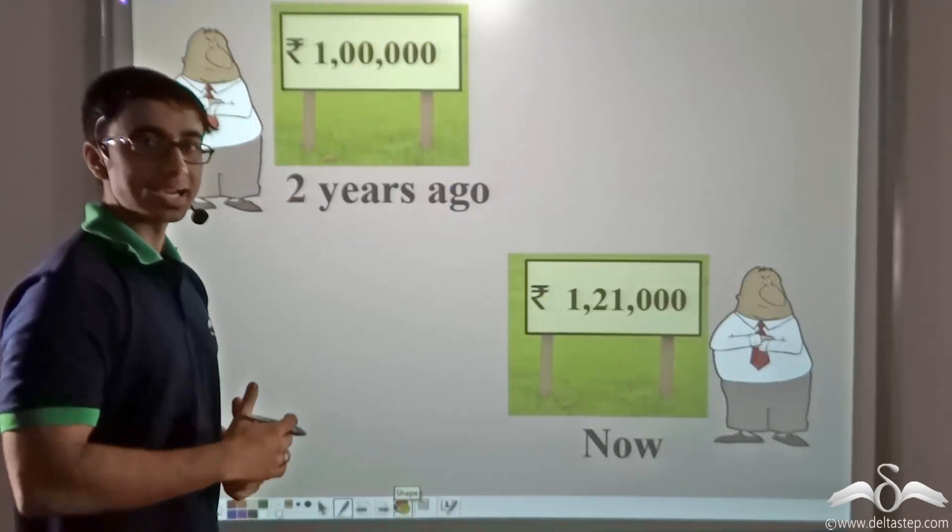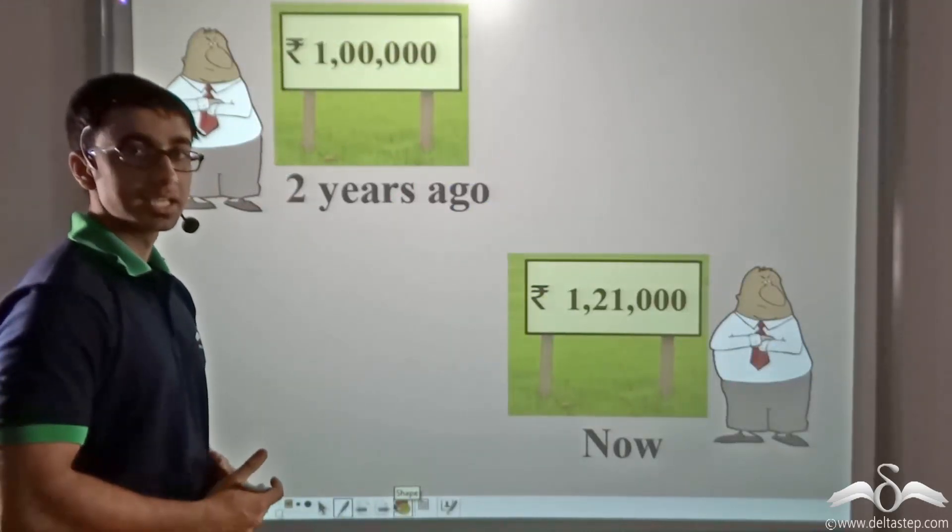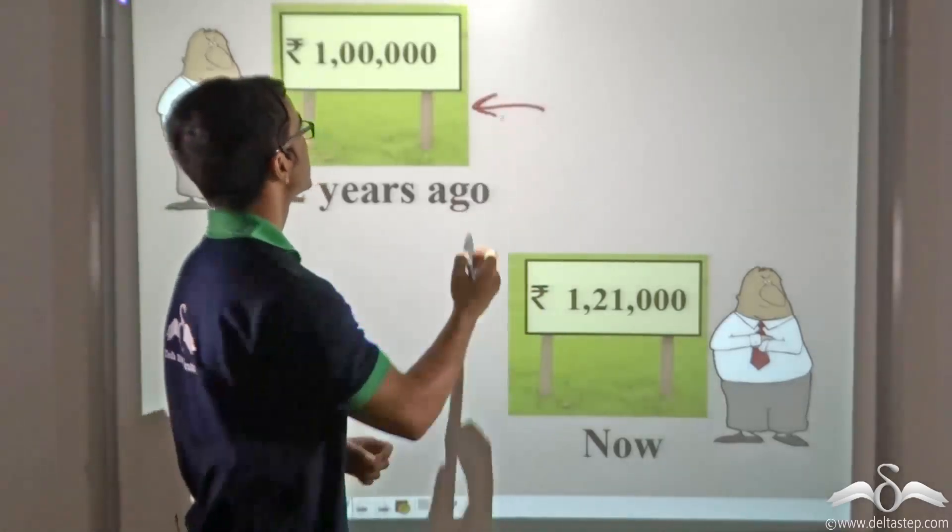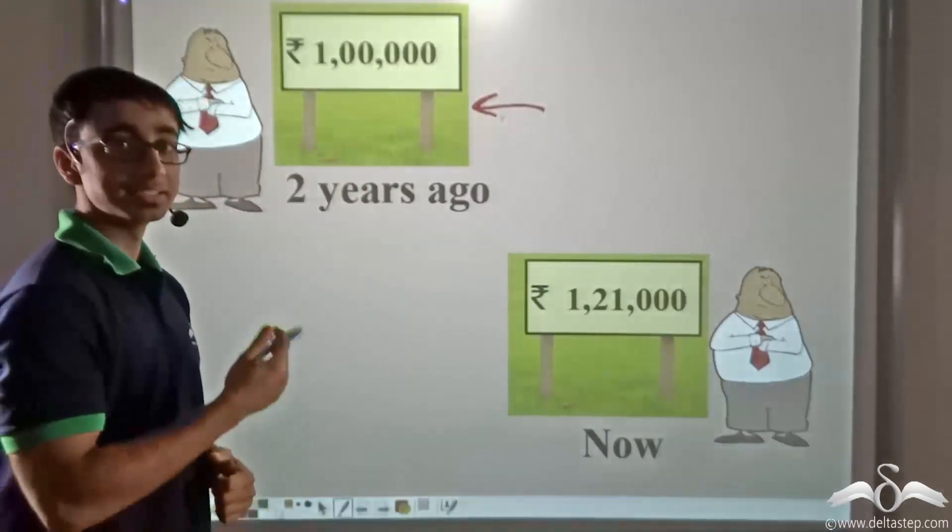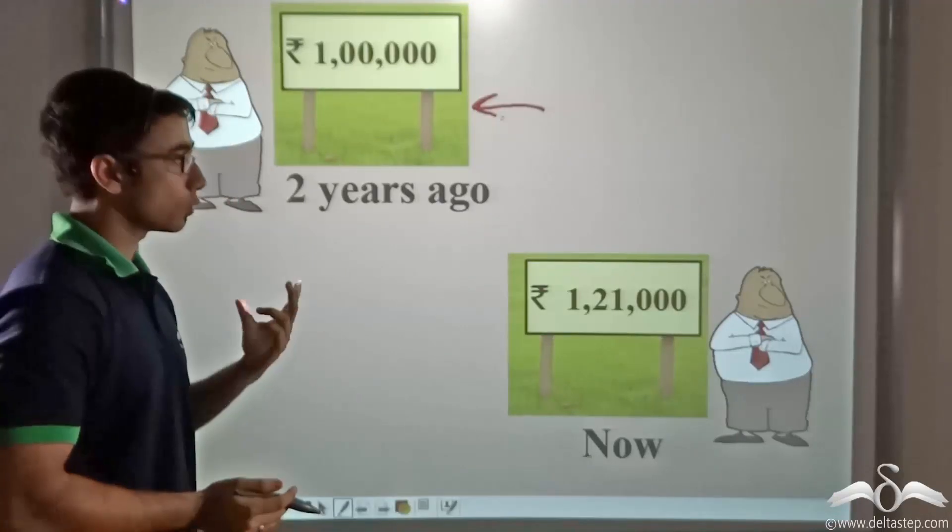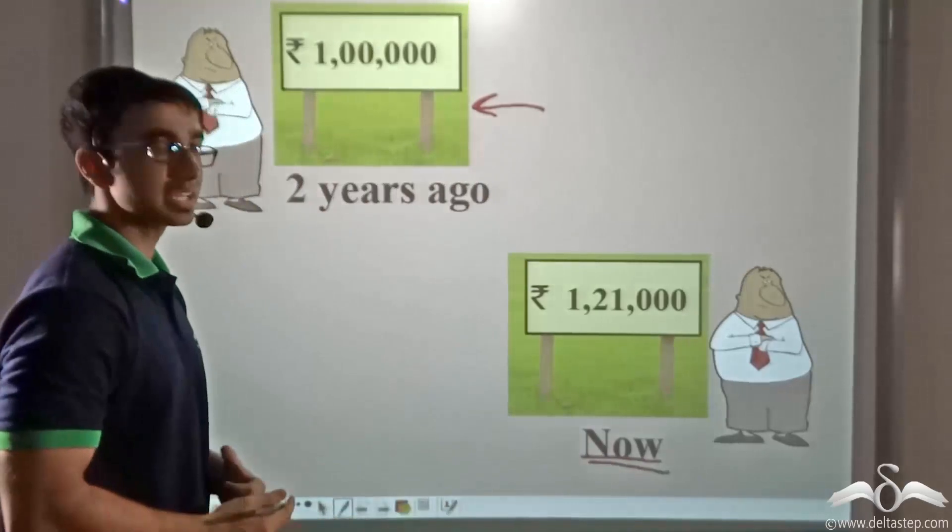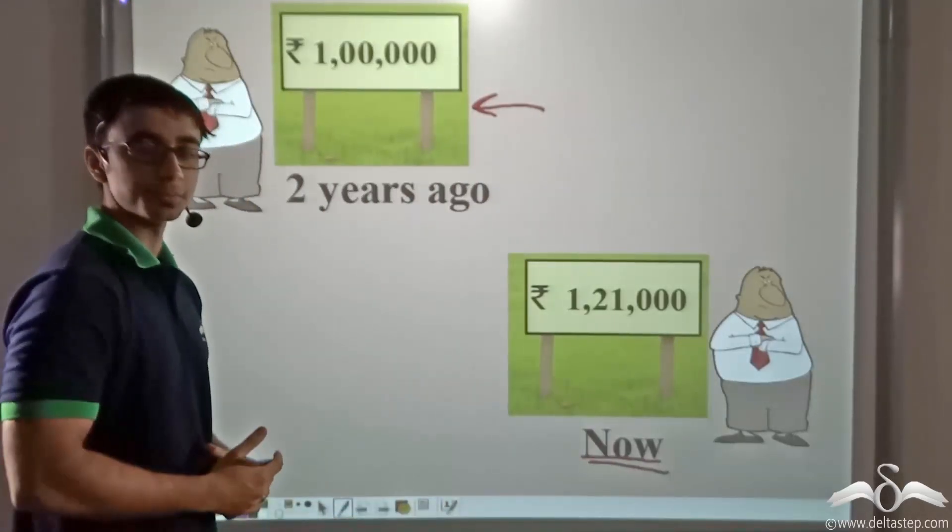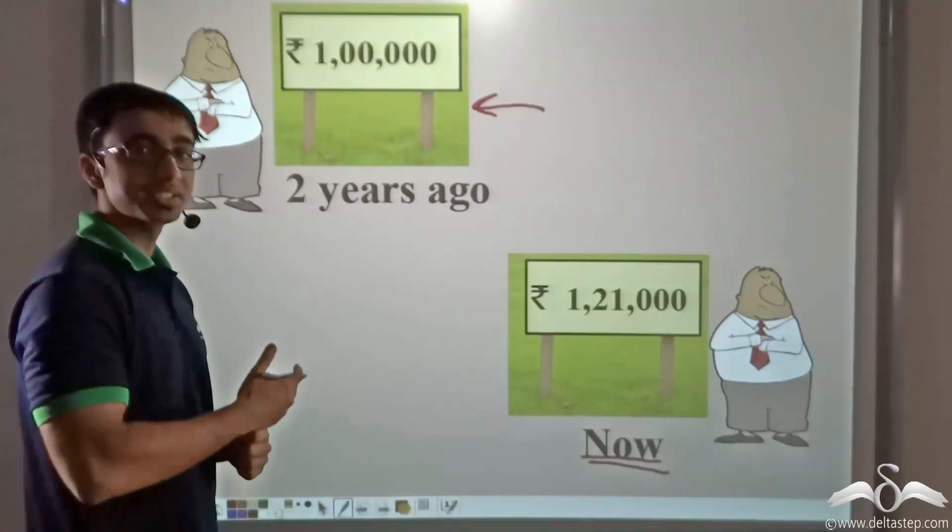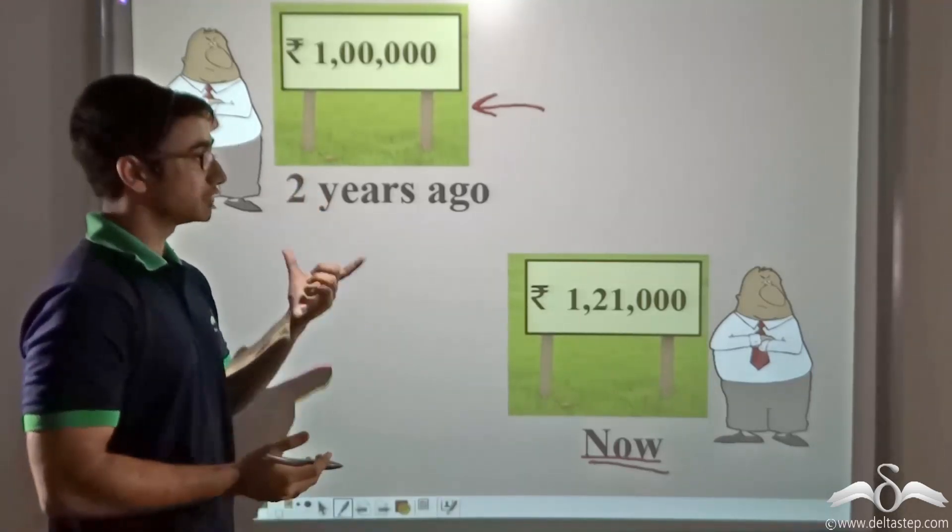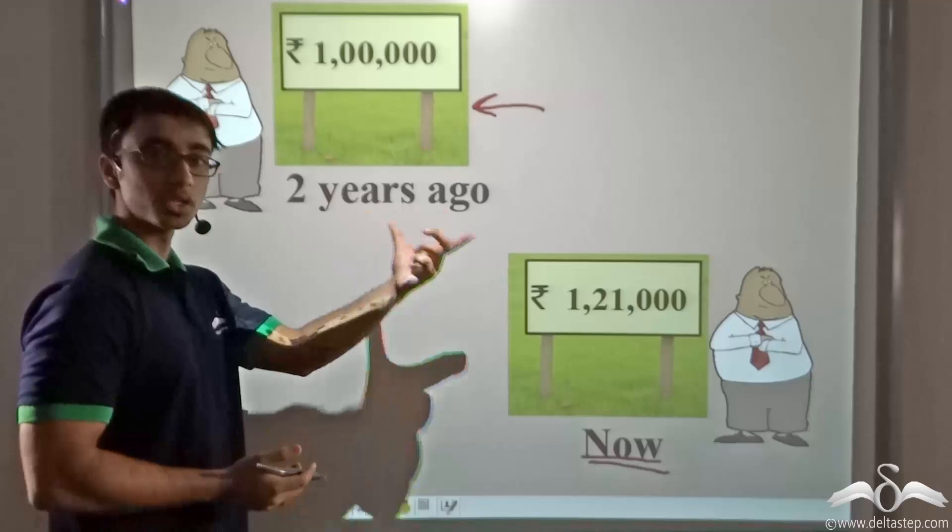Now there was a plot of land that Sudhir wanted to buy. Initially that plot of land was priced at Rs 1 lakh, and this was two years ago. Once two years had elapsed, presently the plot of land is priced at Rs 1 lakh 21,000. So we saw that Sudhir's money had grown from Rs 1 lakh to Rs 1 lakh 21,000 and the value of land had also grown along with it.